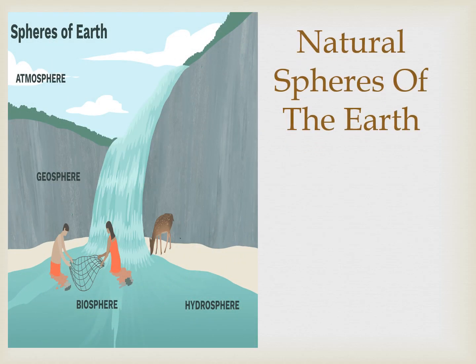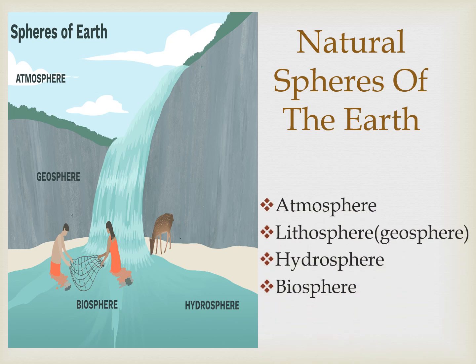Natural Spheres of the Earth: Everything on the earth can be categorized into four interconnected subsystems known as spheres. Each sphere contains a unique type of activity that contributes to completing the system. The four spheres on earth are atmosphere, lithosphere — also called geosphere — hydrosphere, and biosphere.